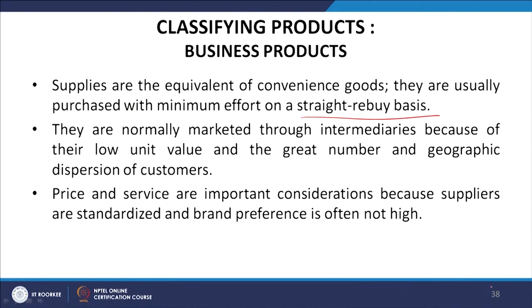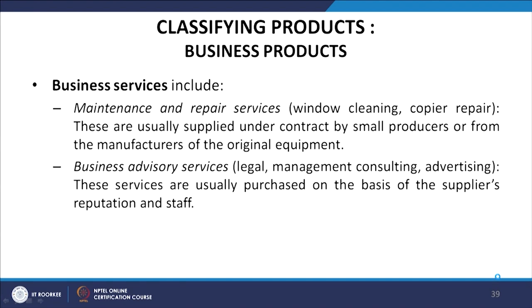Supplies are normally marketed through intermediaries because of their low unit value and the large number and geographic dispersion of customers. Price and service are important considerations because supplies are standardized and brand preference is often not high. Business services include maintenance and repair services, such as window cleaning and copier repair, usually purchased from small producers or equipment manufacturers, and advisory services such as legal services, management consultancies, and advertising, usually purchased on the basis of the supplier's reputation and staff.